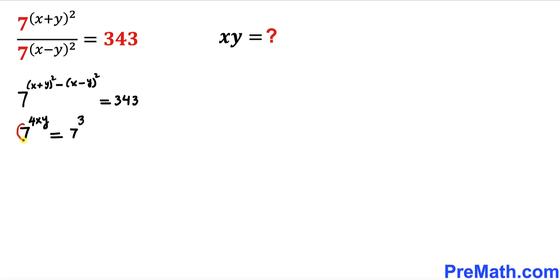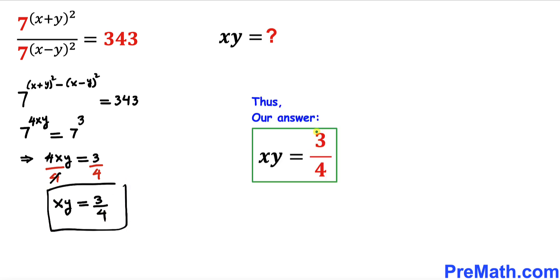And now we can see our bases on both sides are the same. So therefore we can equate our exponents as well. We can write 4xy = 3. Now let's divide both sides by 4 to isolate xy. So xy turns out to be 3/4. Thus our xy value is 3/4.